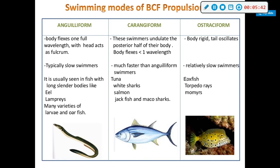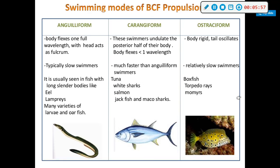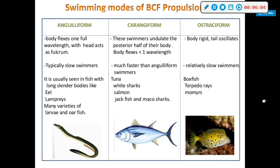Ostraciiform swimmers have a body and tail that oscillates — only their tail oscillates, like one of those little plastic wind-up toys where only the tail moves. These are relatively slow swimmers and include your boxfish, guitarrays, and mobula rays.